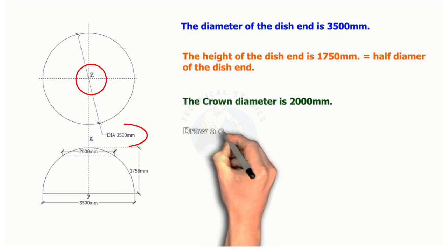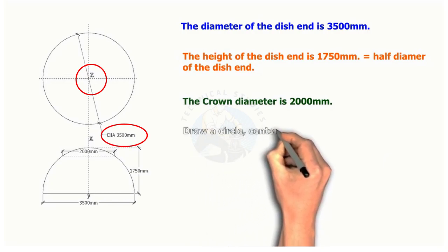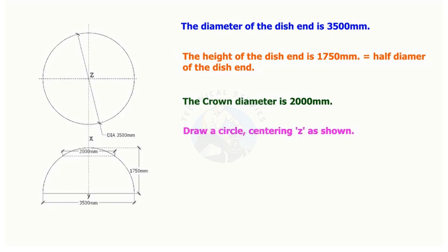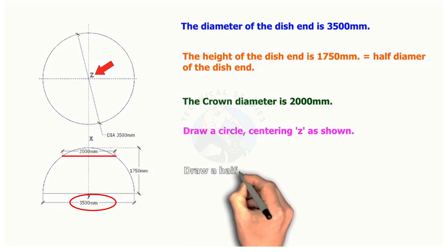Using Z as the center, draw a circle with a 3500 mm diameter. Draw a half circle as shown, and draw the crown line.